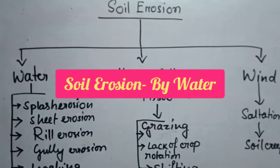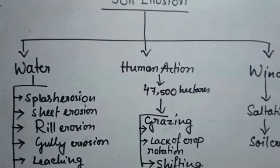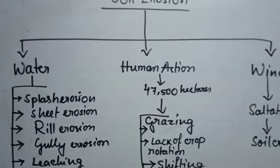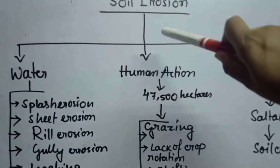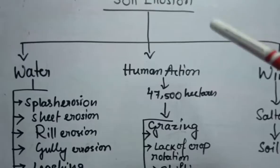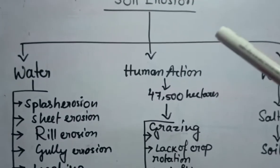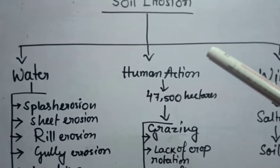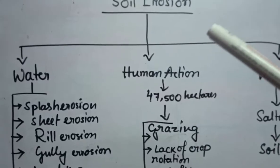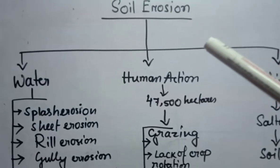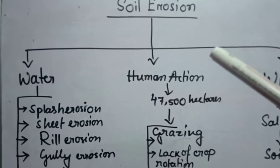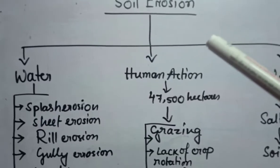Dear students, today I will talk about soil erosion. So what is soil erosion? First we have to know. Soil erosion means the removal of top soil. And you know that students, in the top soil, all the nutrients are present in the top layer and whenever it is removing, that is called soil erosion.